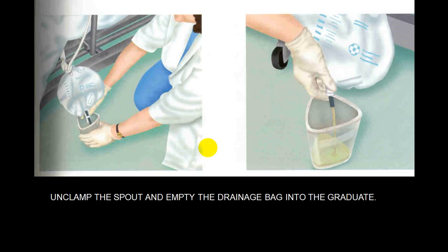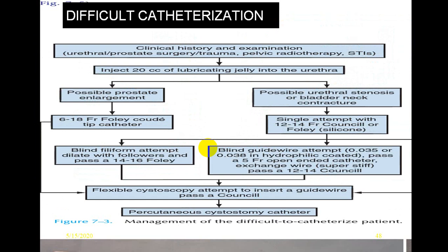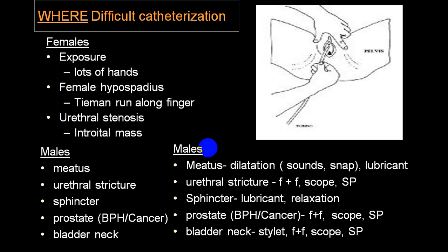Difficulties in catheterization arise when the catheter size is improper, the procedure is not correct, or the indication is wrong. In cases of urethral pathophysiology such as traumatic urethra, stricture, foreign body, or malignancy, difficulty will be encountered — never attempt catheterization forcibly. Always identify the etiology, treat it, and in such cases always perform suprapubic catheterization.